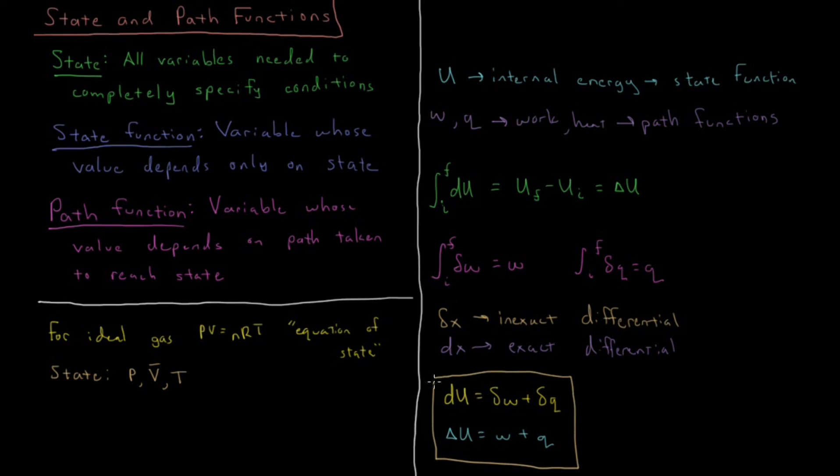So these two forms here are basically the first law for closed systems. We have the differential form in terms of derivatives and infinitesimals, and we have the integrated form in terms of the final integrated result.